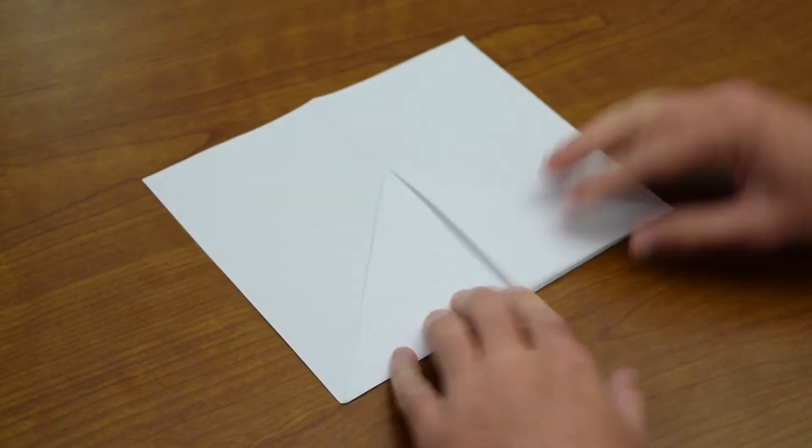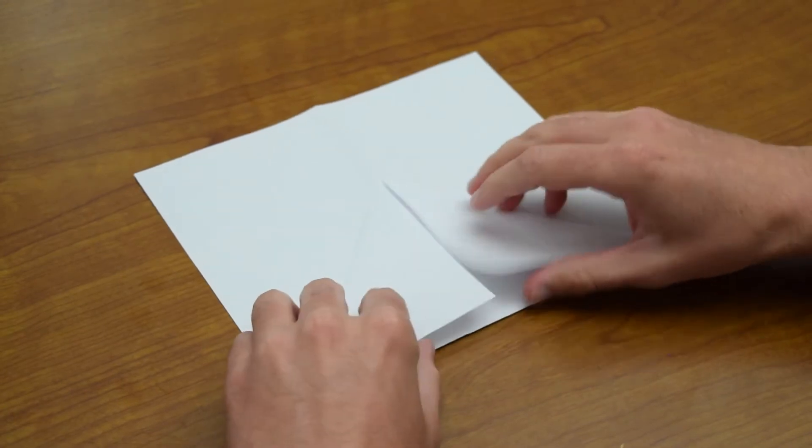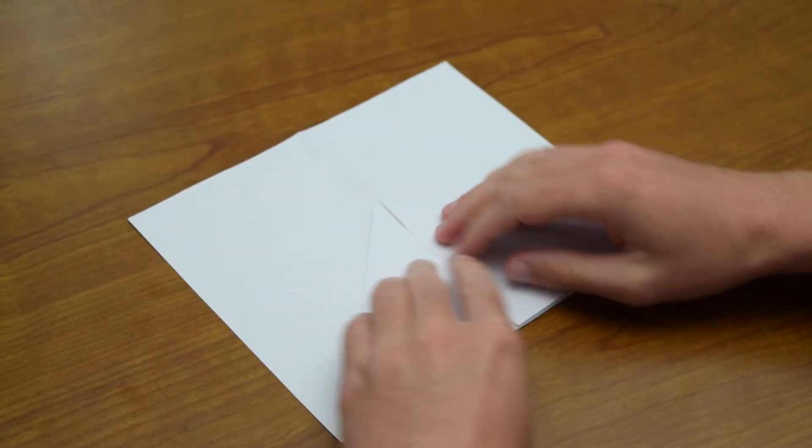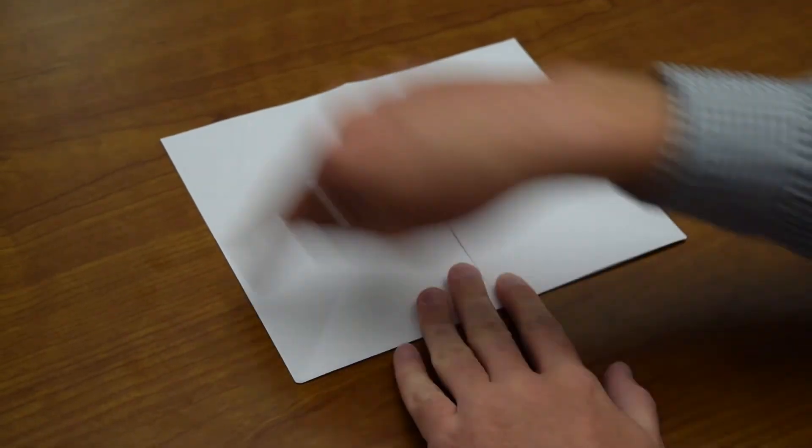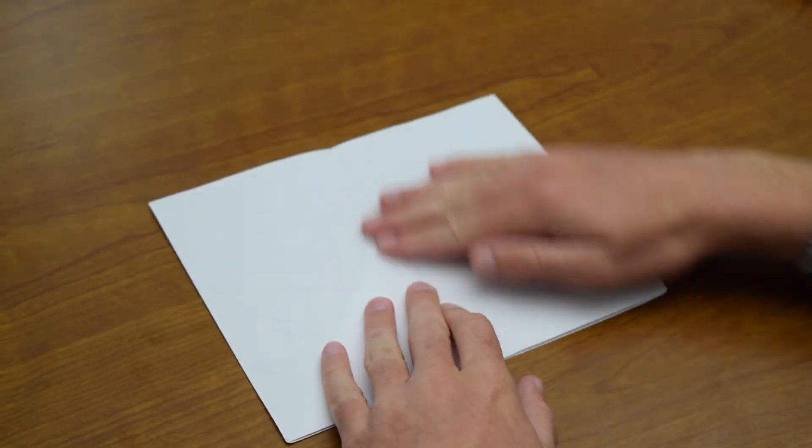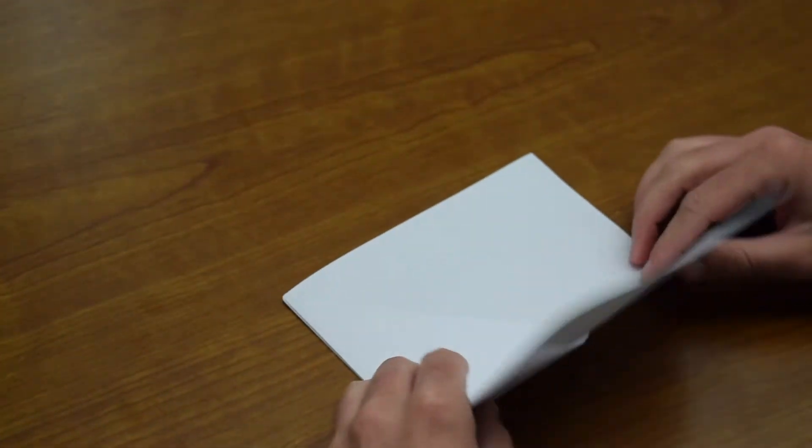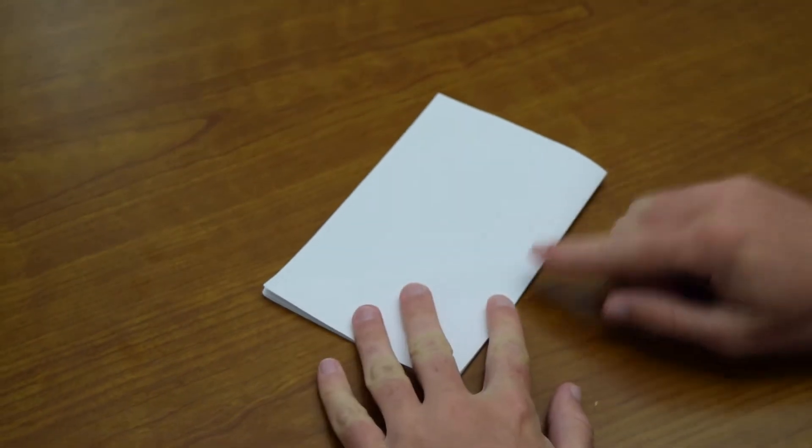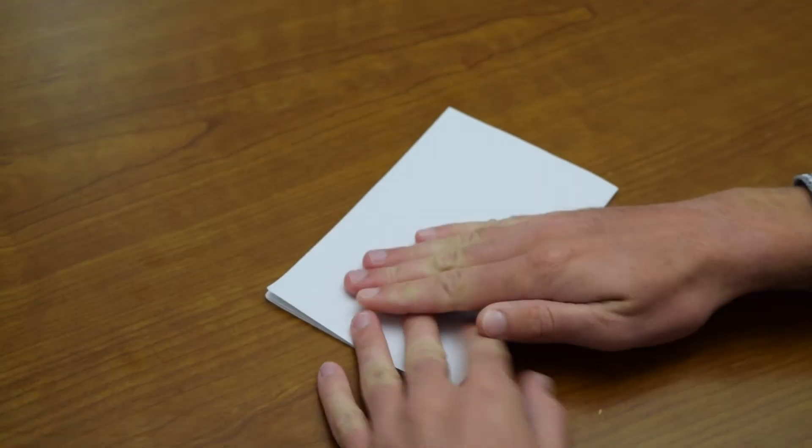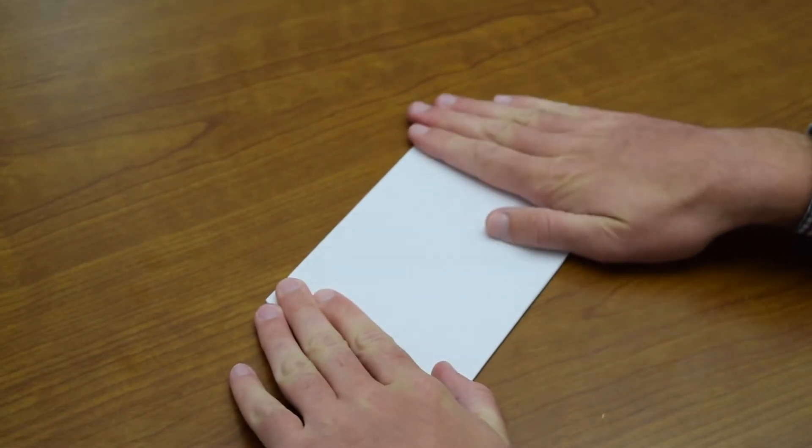See how we folded just about right on that line so now these two triangles are on this side of the page. Now that we have kind of a square shape we're going to take the whole thing and flip it over again. We're going to fold along that crease that we made earlier. This doesn't really do anything per se other than make sure that everything's lined up.